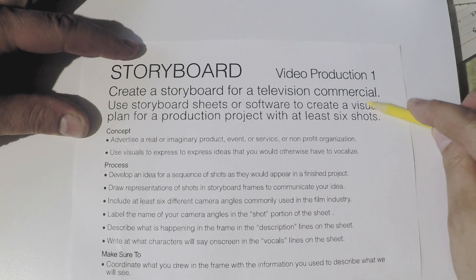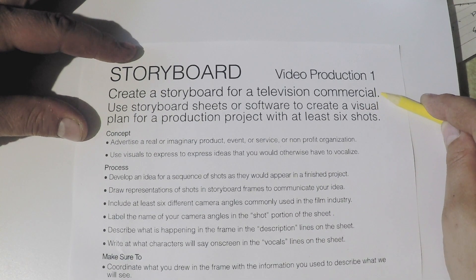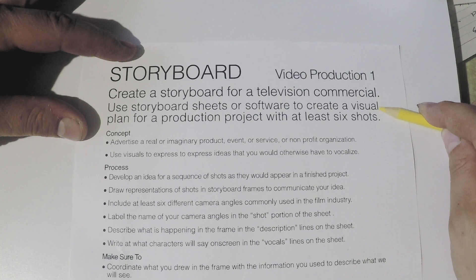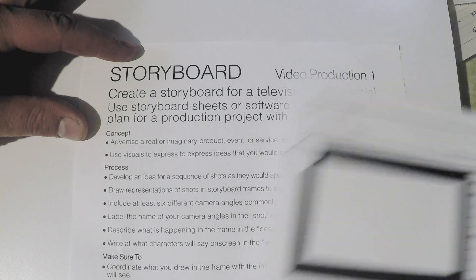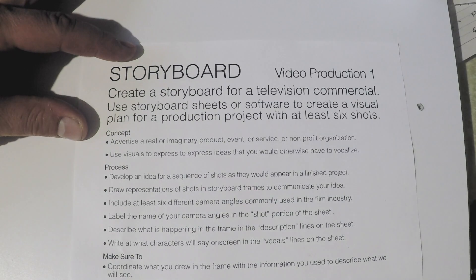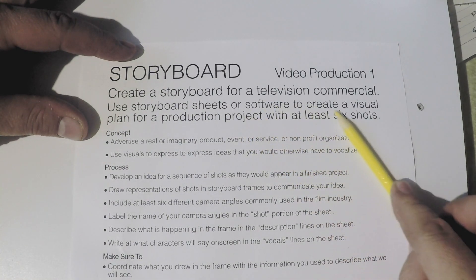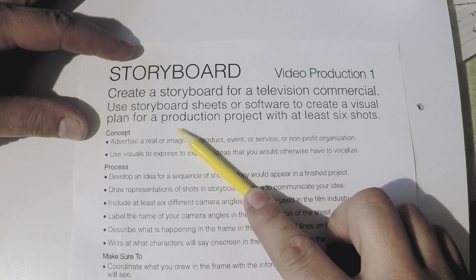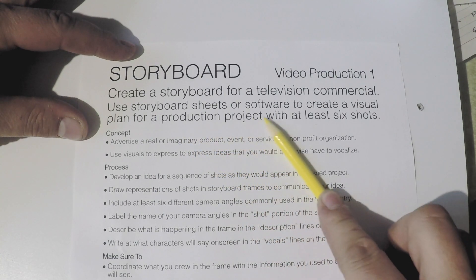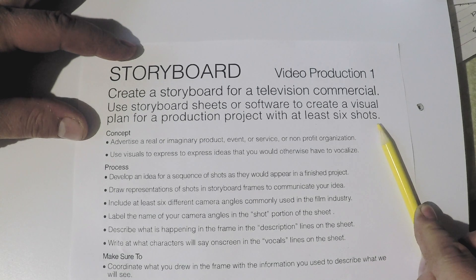Create a storyboard for a television commercial — hopefully you've all seen a television commercial before. Use storyboard sheets like these, or software, to create a visual plan for a production project. And it will have at least six shots.